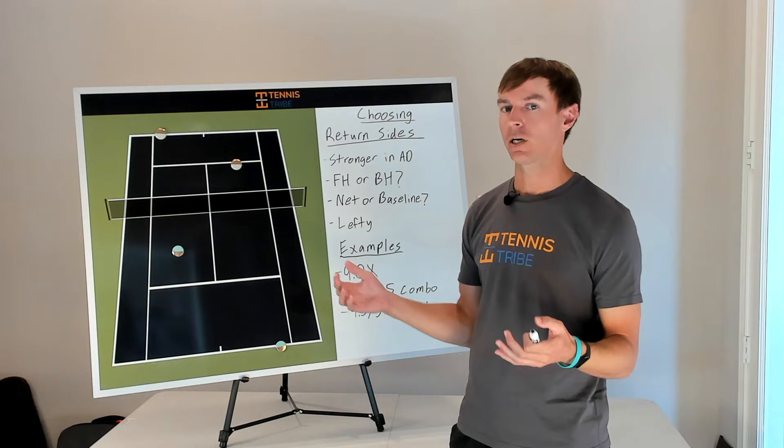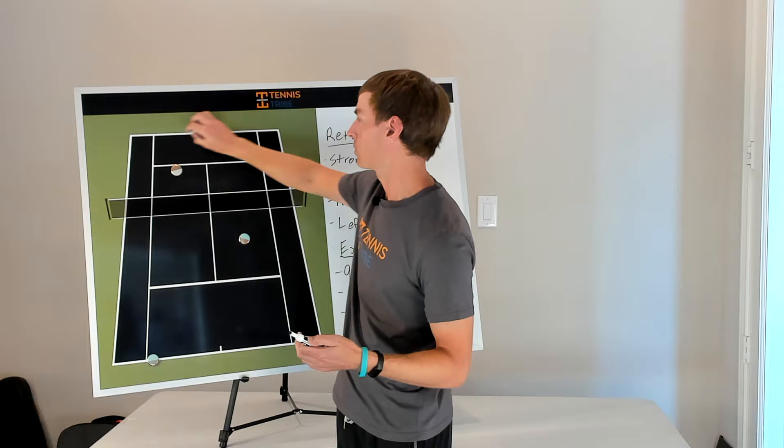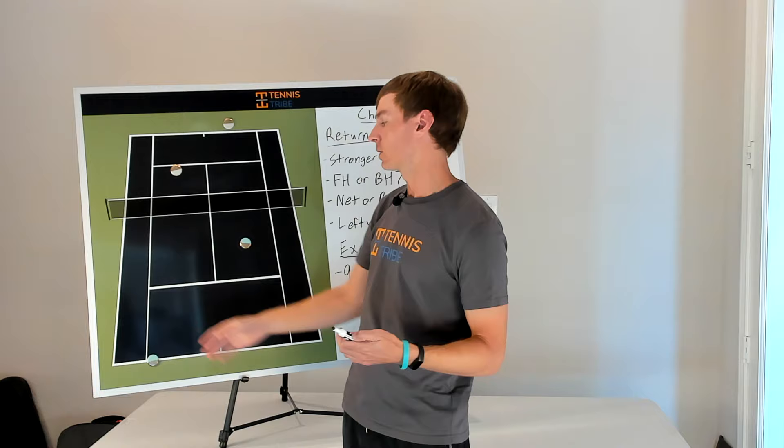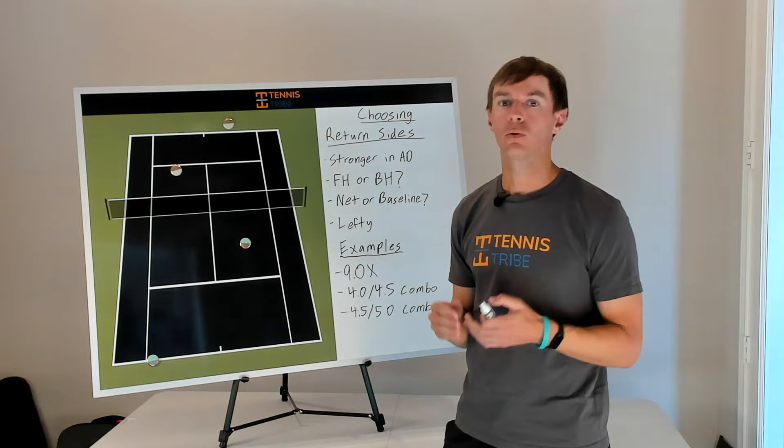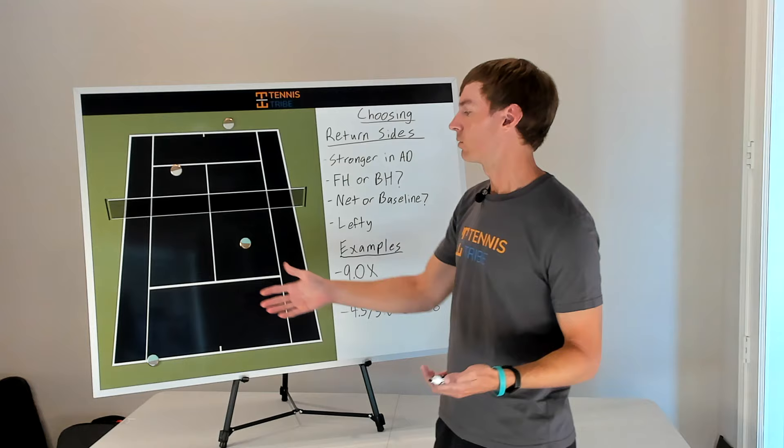So if you're able to have the stronger player in the deuce court, you're more likely to get looks at 30-40 where you're up break point. Whereas if the weaker player's in the deuce court, you're more than likely going to be down 40-30 trying to stay in the game. And the odds of them winning the point don't go down just because they're the weaker player. They're still going to win about 40% of those break points, just like they'll win about 40% of the love 15 or 15 love points.